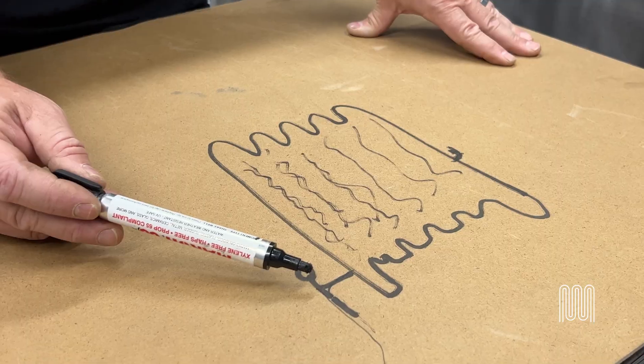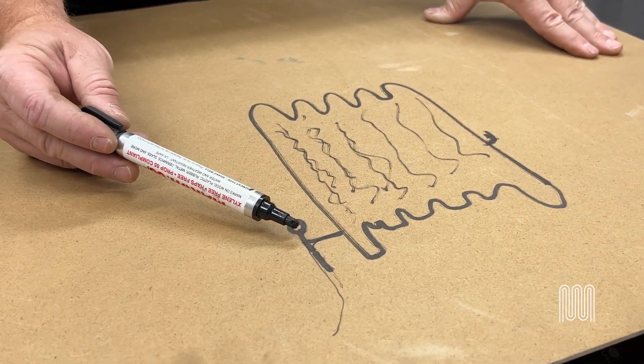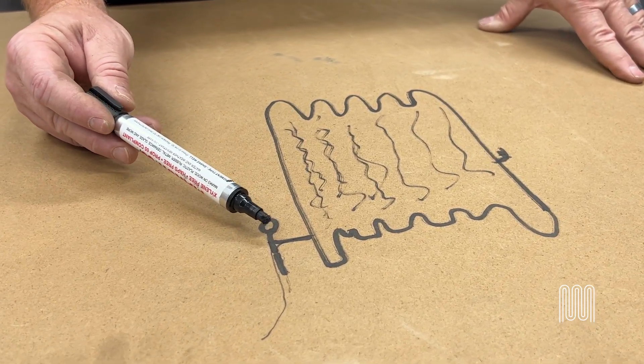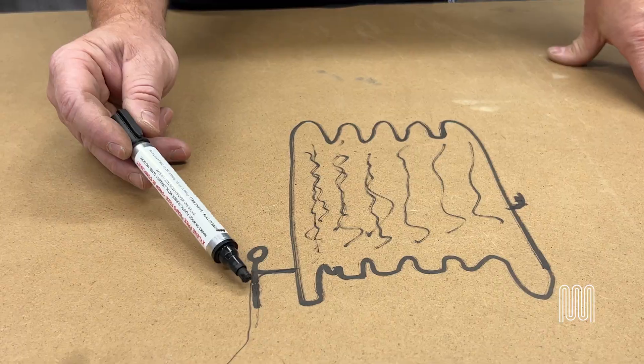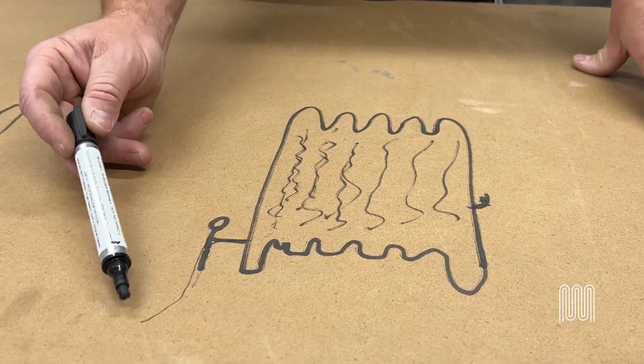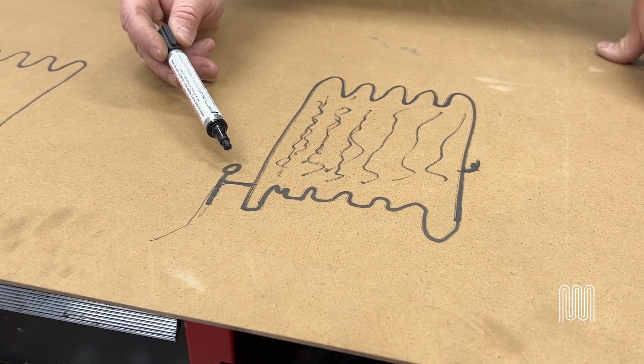The piping on a single pipe steam rad will be significantly larger than a two pipe rad because it has to do double duty. It's got to act as a gravity condensate return as well as the steam supply to the radiator.